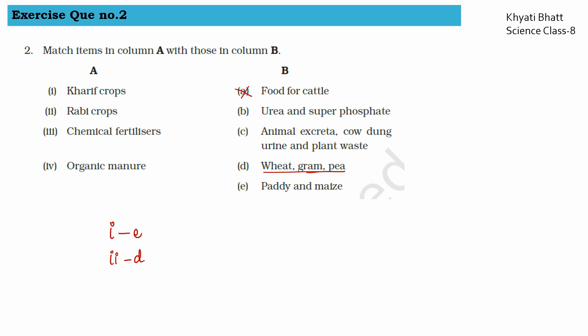Then comes animal excreta — cow dung, urine, and plant waste. We have two left: chemical fertilizer and organic manure. Chemical fertilizers are urea and super phosphate, and organic manure is animal excreta, cow dung, urine, and plant waste.